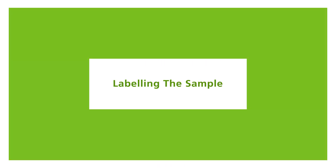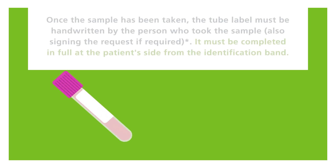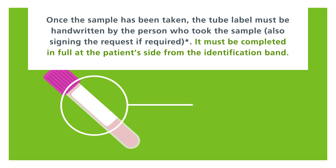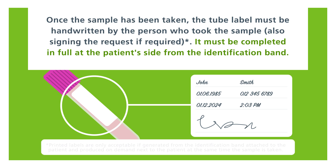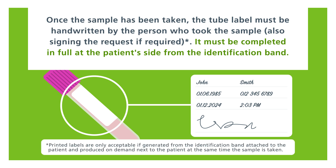Labeling the sample. Once the sample has been taken, the tube label must be handwritten by the person who took the sample, also signing the request if required. It must be completed in full at the patient's side from the identification band. Printed labels are only acceptable if generated from the identification band attached to the patient and produced on demand next to the patient at the same time the sample is taken.